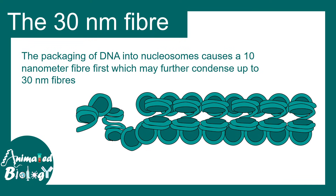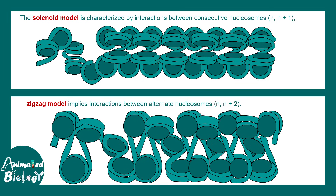These beads-on-string structures are predominantly seen in interphase. There are also higher-order structures such as the 30 nanometer fiber, which is a bit more organized. H1 histones help in the formation of these 30 nanometer structures. The most common model is the solenoid model, characterized by interaction between consecutive nucleosomes — nucleosome N interacts with nucleosome N+1. There is also the zigzag model, which implies interaction between alternate nucleosomes, meaning N interacts with N+2 rather than N+1.